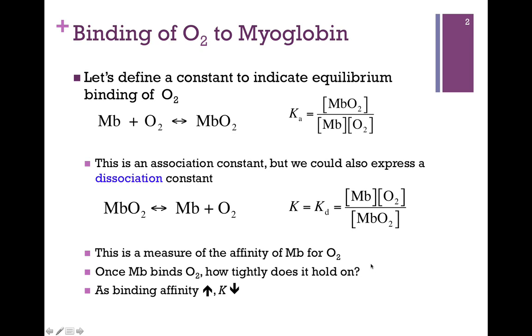In either case, whether it's an association constant or dissociation constant, it's still a measure of the affinity of myoglobin for oxygen. From the association point of view, it's how readily does it bind, and the dissociation, how readily does it let go of oxygen. For most biochemists, we consider binding constants in terms of a dissociation constant, and so it's the latter case we'll be looking at here.